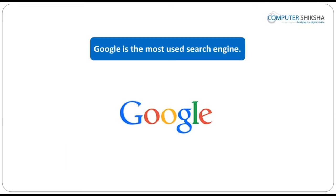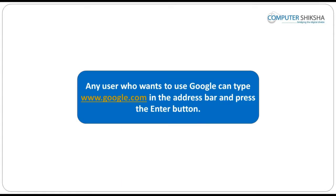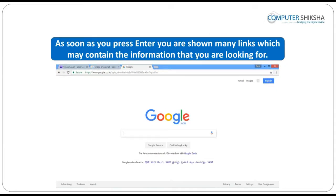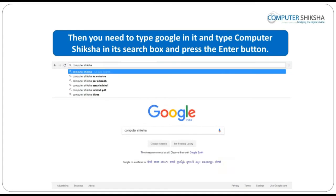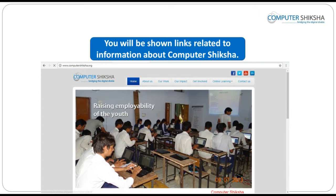Google is the most used search engine and is well known amongst users. Any user who wants to use Google can type www.google.com in the address bar and press the enter button. This will open the Google homepage and then you need to type in the search box what you are looking for. As soon as you press enter, you are shown many links which contain the information you are looking for. For instance, if you want information about Computer Shiksha on Google, type it in the search box and press enter.